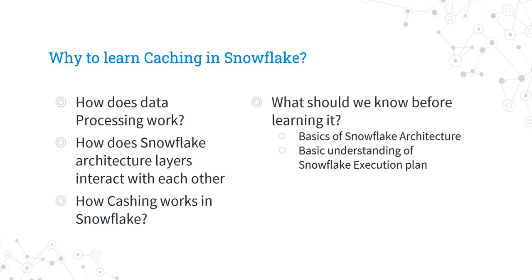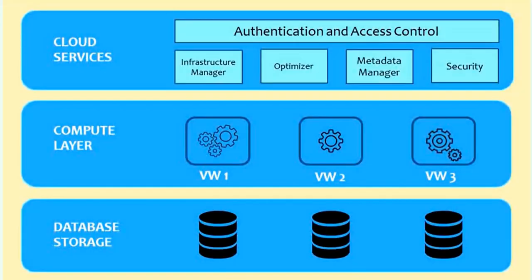Before we start learning about the caching concept, make sure you have a basic understanding of Snowflake architecture and at least some basic understanding about the Snowflake execution plan. This is the Snowflake architecture. It has three main layers: the very first layer is database storage, the second layer is compute layer, and the third layer is cloud services.